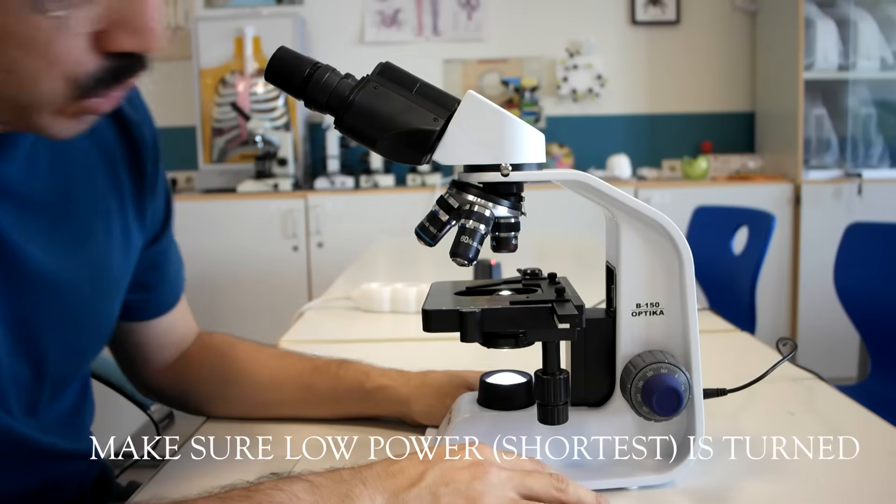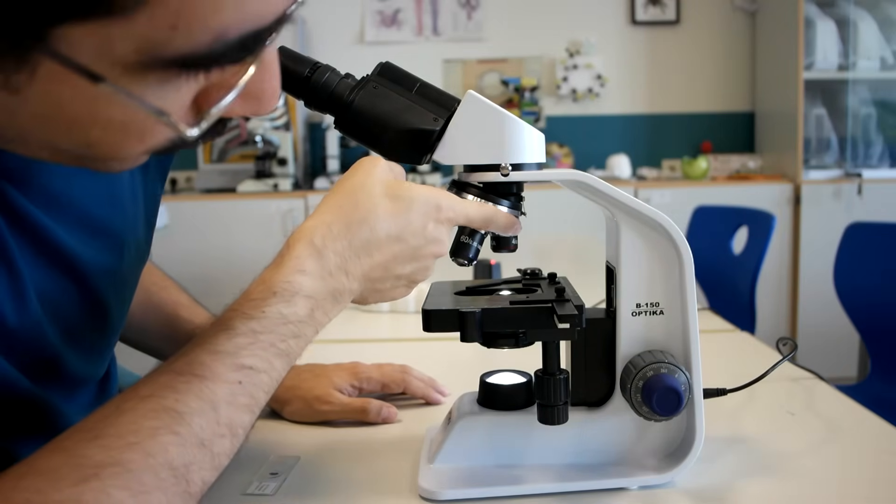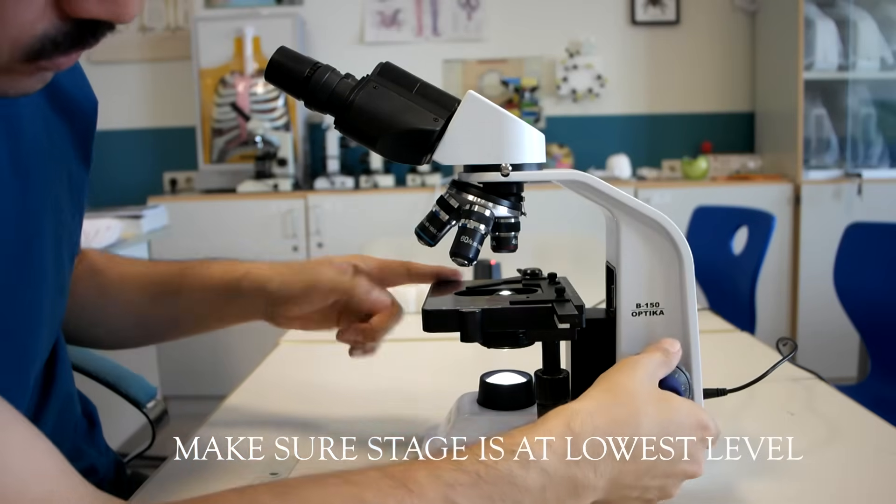First, make sure the shortest one, the low power objective lens, the 4, is turned on. Make sure it's turned on. Then make sure the stage is down.